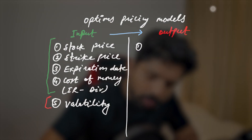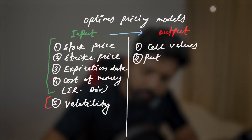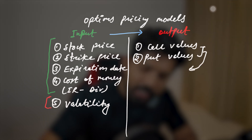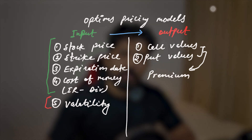The more accurately you are able to estimate the volatility, the better the results will be. When we give inputs into the model, there will be outputs. In option pricing models, the outputs are call values and put values — altogether, we can call these option prices or the premium. And these are the theoretical values.